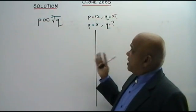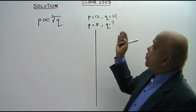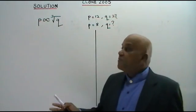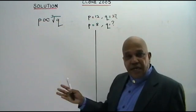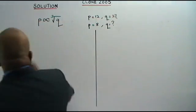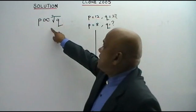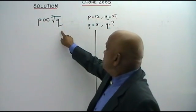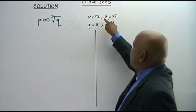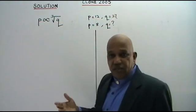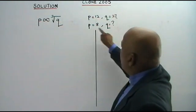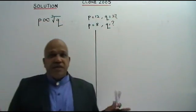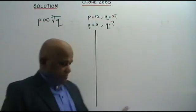Here I have a clone question based on the year 2005 — direct variation. You are given P varies directly as the cube root of Q. When P is 12, Q is 27. You are asked to find the value of Q when P is 8. As usual, we must find the value of K.